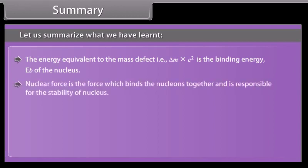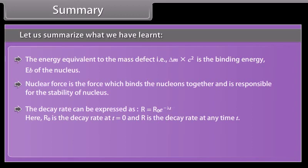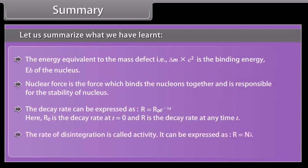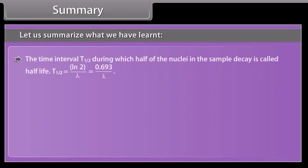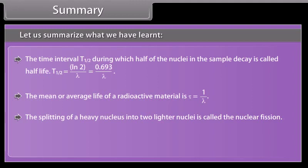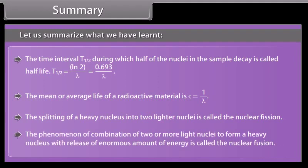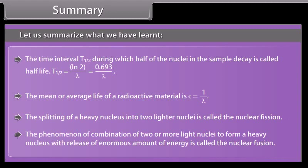Nuclear force is the force which binds the nucleons together and is responsible for the stability of nucleus. The decay rate can be expressed as R equals R not E to the power minus lambda T. Here R not is the decay rate at T is equal to zero, and R is the decay rate at any time T. The rate of disintegration is called activity. It can be expressed as R equals N lambda. The SI unit for activity is Becquerel. The time interval T half during which half of the nuclei in the sample decay is called half life. The mean or average life of a radioactive material is Tau equals 1 by lambda. The splitting of a heavy nucleus into two lighter nuclei is called the nuclear fission. The phenomenon of combination of two or more light nuclei to form a heavy nucleus with release of an enormous amount of energy is called the nuclear fusion.